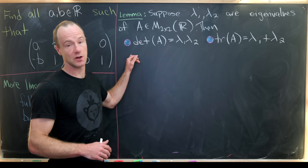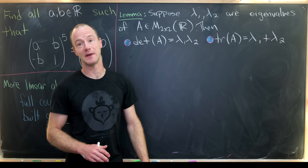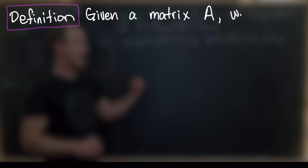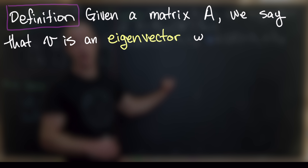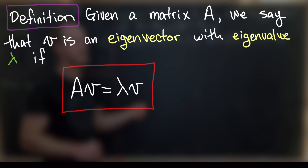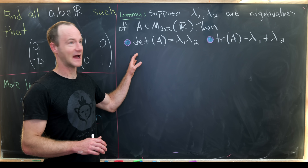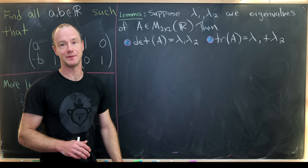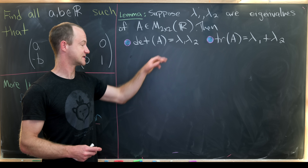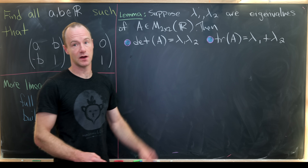We're going to start this problem with the following lemma. We want to suppose lambda one and lambda two are eigenvalues of a matrix A. Recall that an eigenvalue has the property that A times a vector V equals a number lambda times that vector V — that vector V is called an eigenvector and lambda is called an eigenvalue, an eigenvector-eigenvalue pair. We want to show that the determinant of a two-by-two matrix is the product of the eigenvalues, whereas the trace is the sum of the eigenvalues.